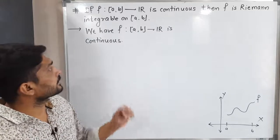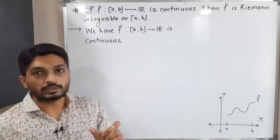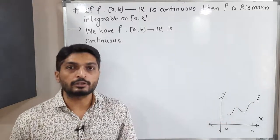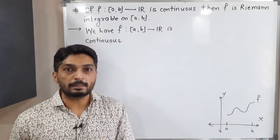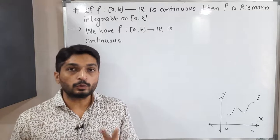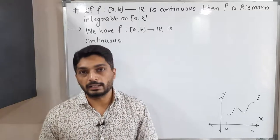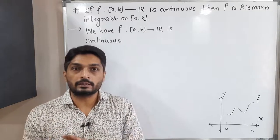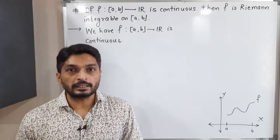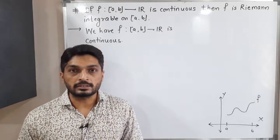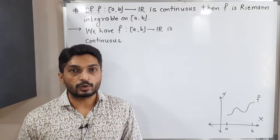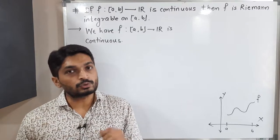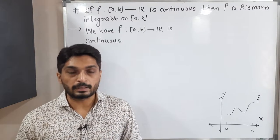We have a function f defined from the closed interval [a, b] to ℝ which is a continuous function. In this diagram you can easily see the continuous function and we have to prove it is Riemann integrable. There are two ways to prove this: first, we can prove the upper integral equals the lower integral; second, using the epsilon definition, also called the Riemann criteria. Here we are going to use the second method.